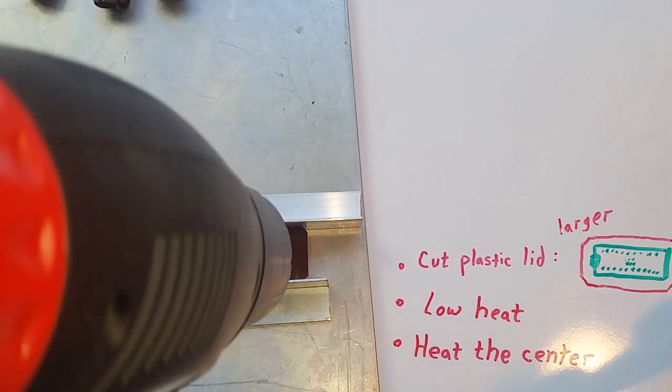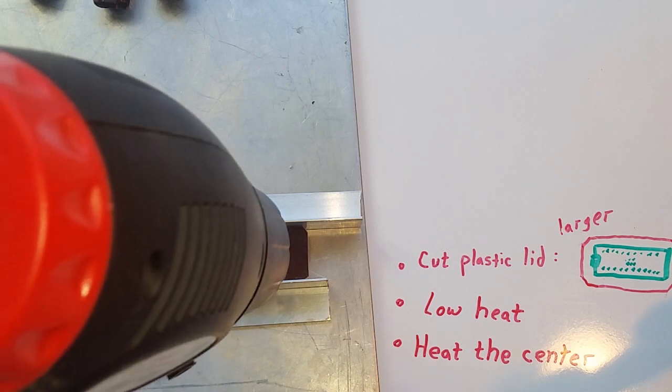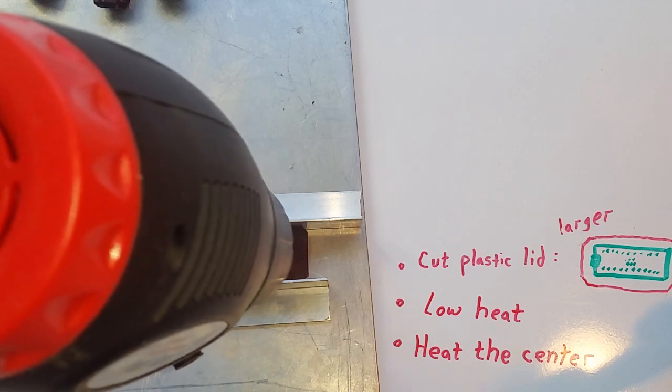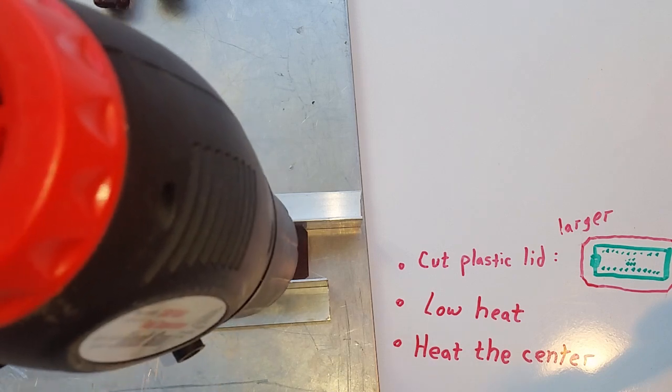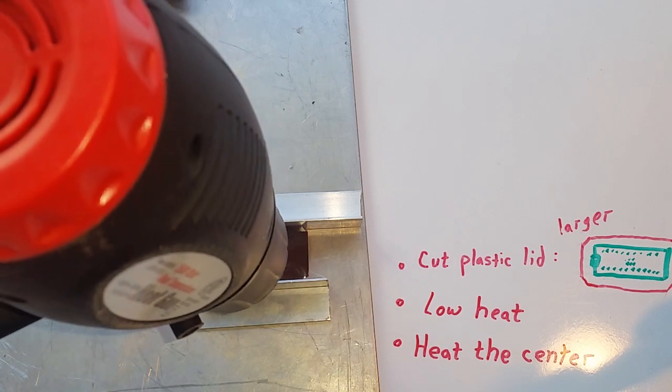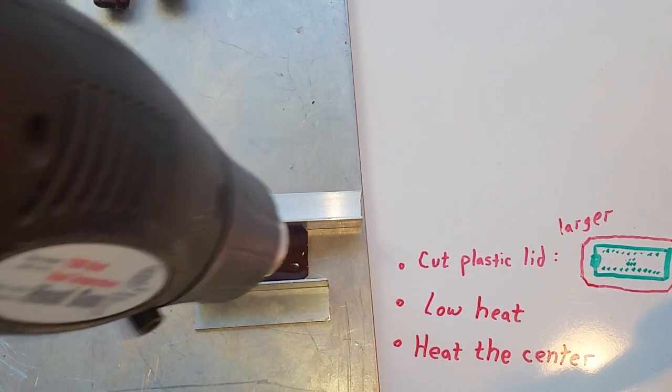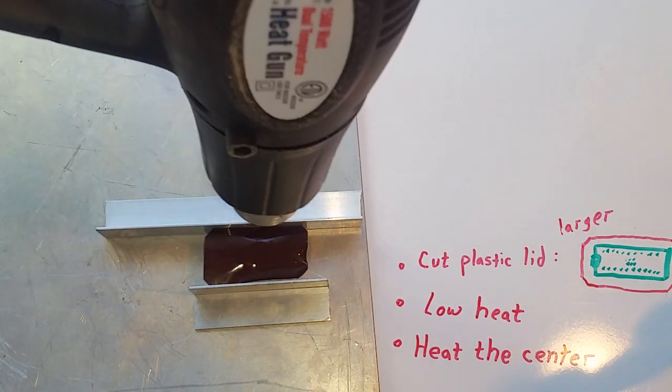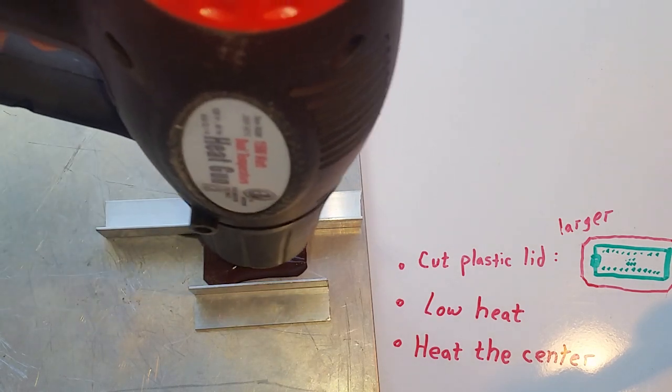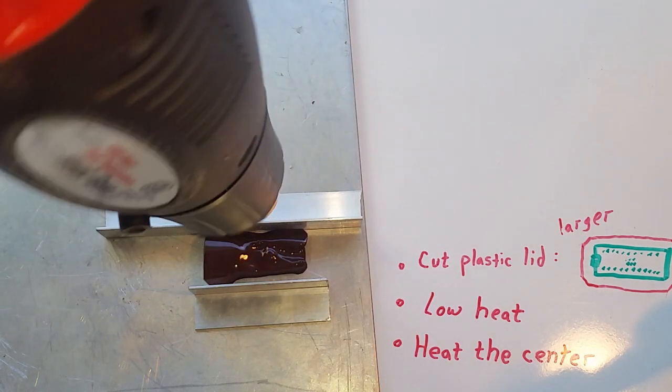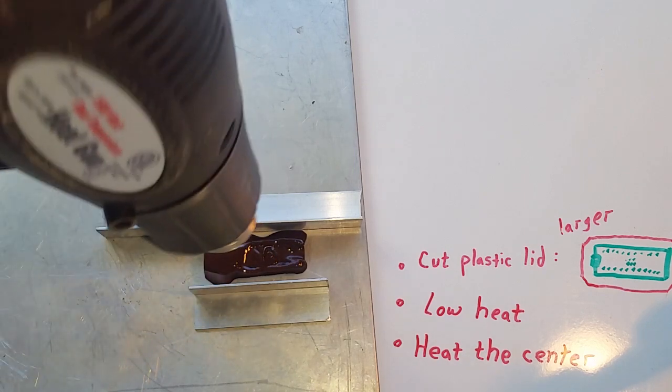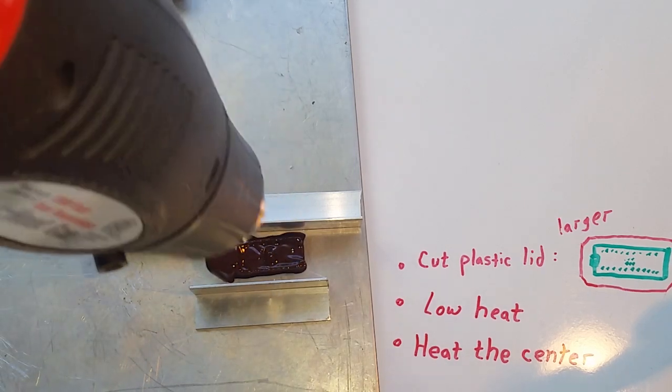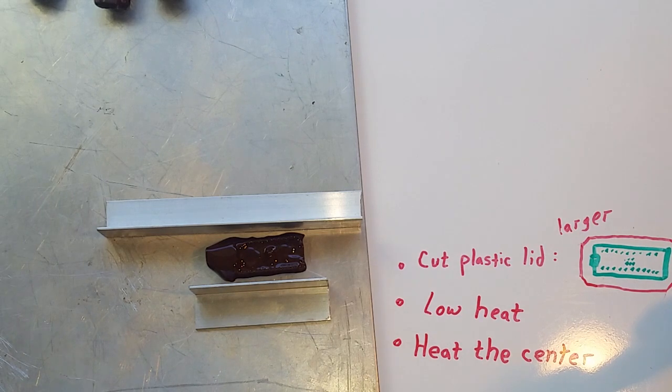And it will start to droop pretty quickly and you don't want to apply too much heat or the pins will poke out. Once it starts melting, kind of edge it over to the sides. See it draping over. Just kind of get it on the sides and then be done with it. Don't do it too much.